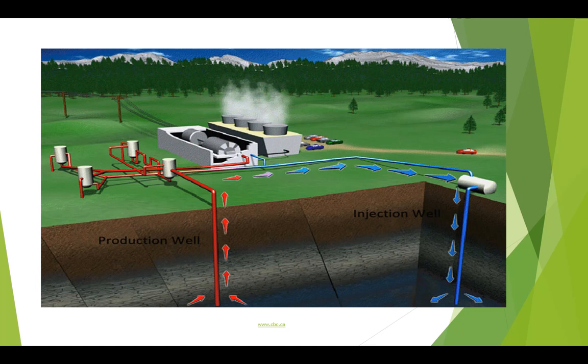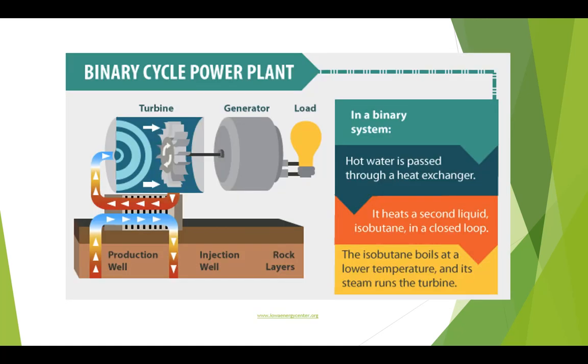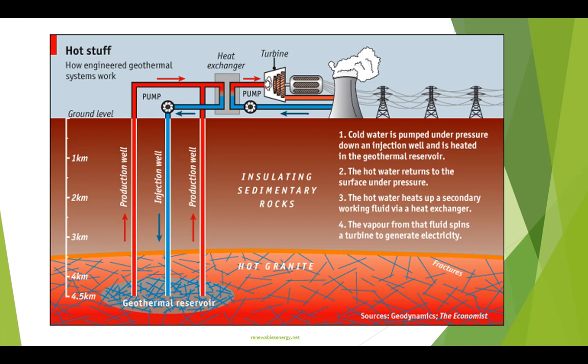Both dry steam and flash steam power generation require quite hot geothermal resources. A significant number of geothermal resources are lower in temperature and cannot generate enough steam to operate these types of plant. These resources can still be used to produce electricity in a binary power plant, also known as an organic Rankine cycle power plant. A binary system uses a separate working fluid with a lower boiling point such as ammonia, propane, isobutane and isobutanol. The heat from the geothermal resource is transferred into the binary fluid using a heat exchanger, and the geothermal fluid is returned to the aquifer via re-injection wells, never coming in contact with a turbine. When the binary fluid is heated, it flashes into vapour to drive a turbine, then is condensed and used repeatedly in a closed loop.